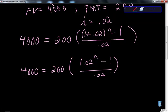From here, there's tons of ways to do this. One thing we can do is divide both sides by 200, and we would get 20. So we get 20 equals 1.02 to the n minus 1, all over 0.02.